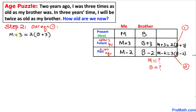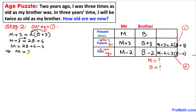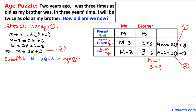Here I have copied equation number two. Let's simplify it. Distribute two with b and three: m plus three equals two b plus six. Moving three to the other side: m equals two b plus six minus three, so m equals two b plus three. I'm going to call this equation number three.